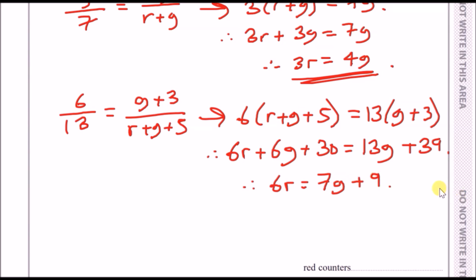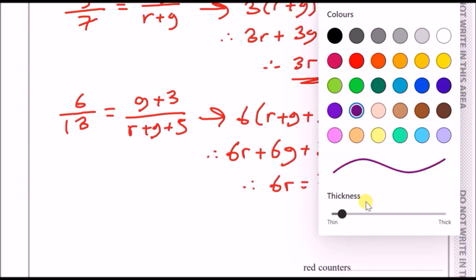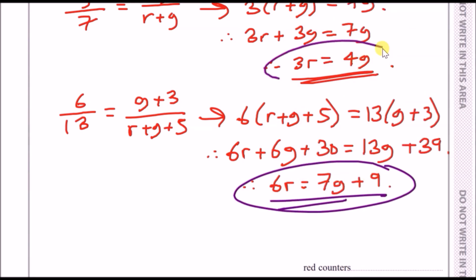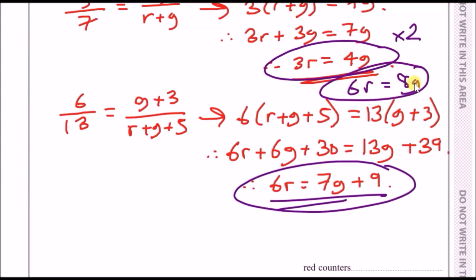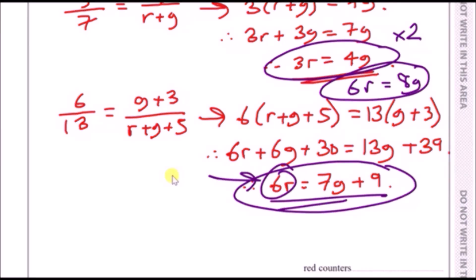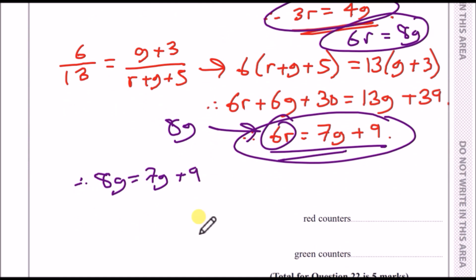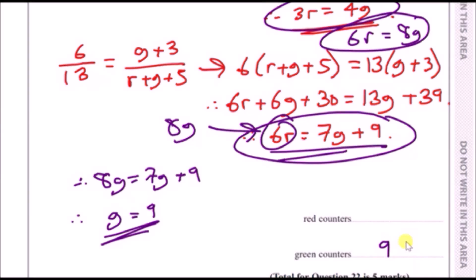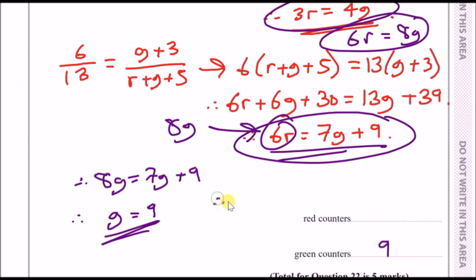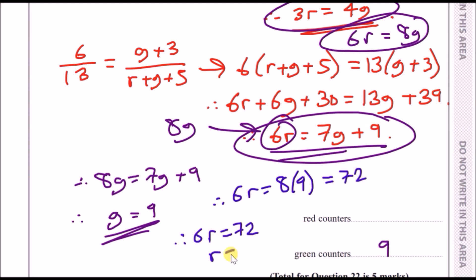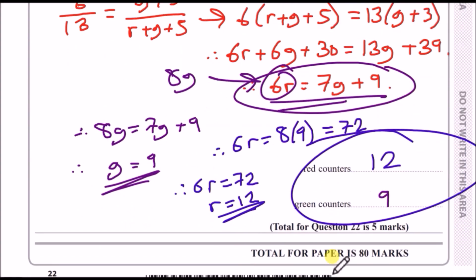Multiply the first equation by 2: 6r = 8g. Substitute into the second: 8g = 7g + 9, so g = 9 green counters. Substitute g = 9 back: 6r = 8 × 9 = 72, so r = 12 red counters. That's the end of the paper.